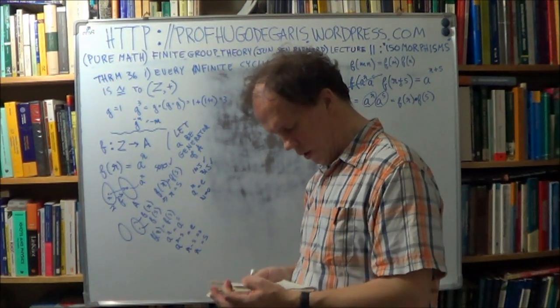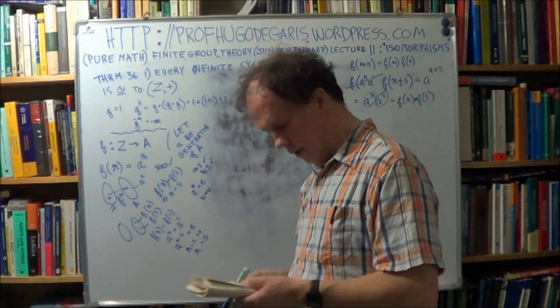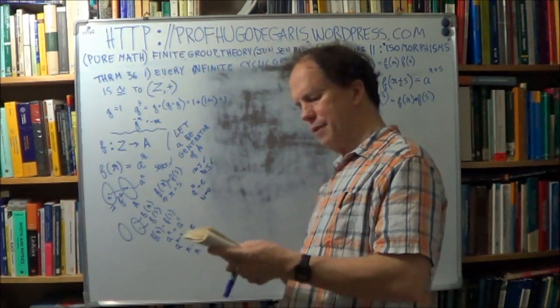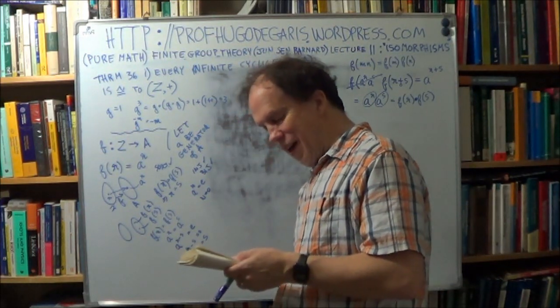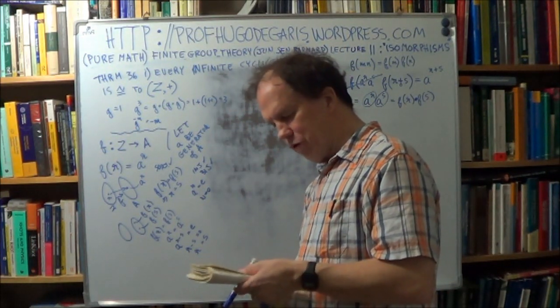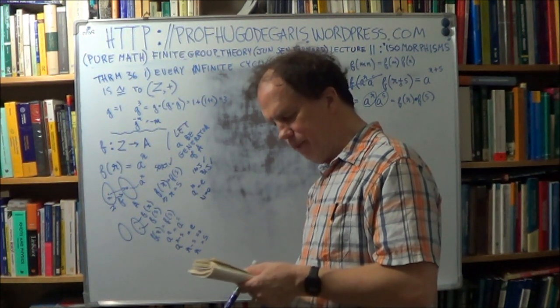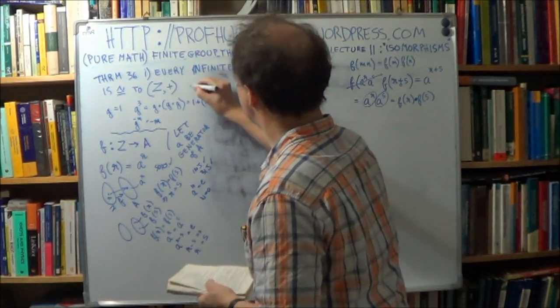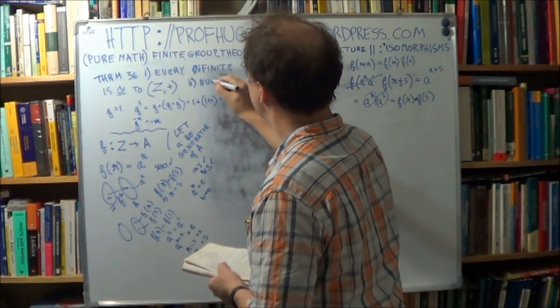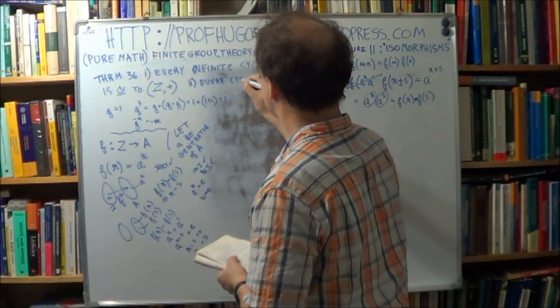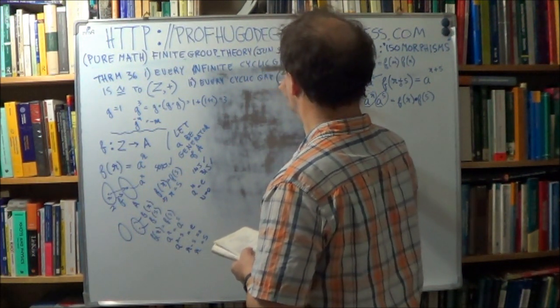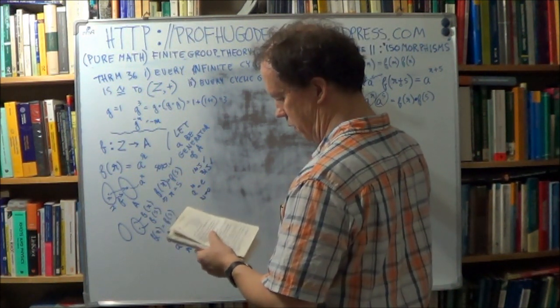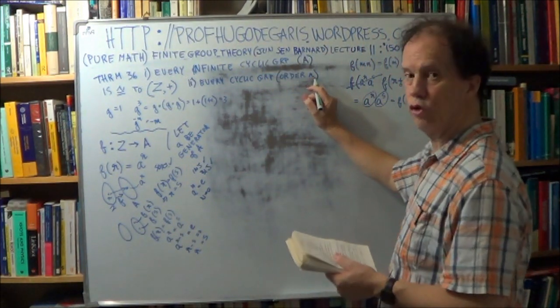Now, part two, what does it say, that's a bit more complicated, and again, oh, no, it's not an IFF, good, so, a bit less work, okay, part two says, every cyclic group of finite order N, is isomorphic to, so, every cyclic group, order N, now, this time, we're talking about the order of the group, okay.